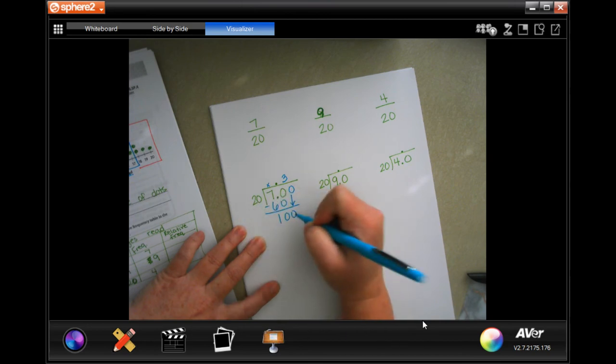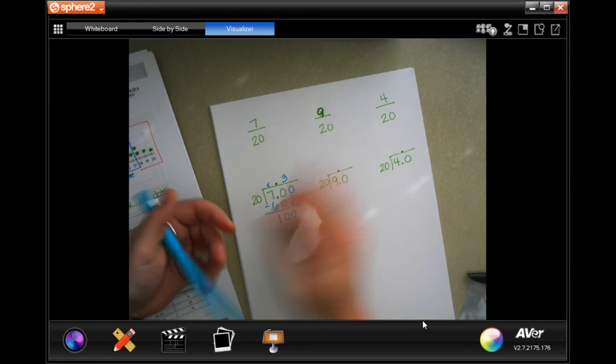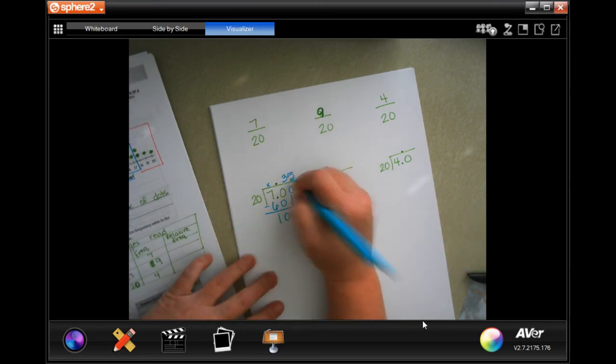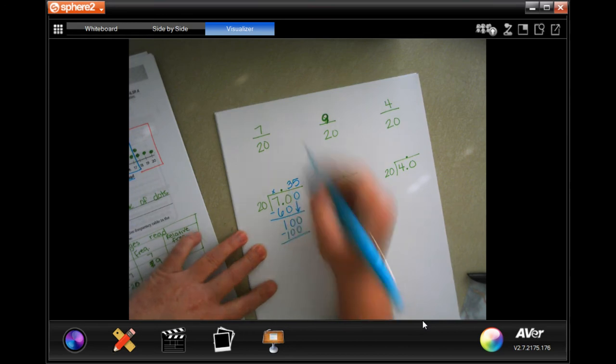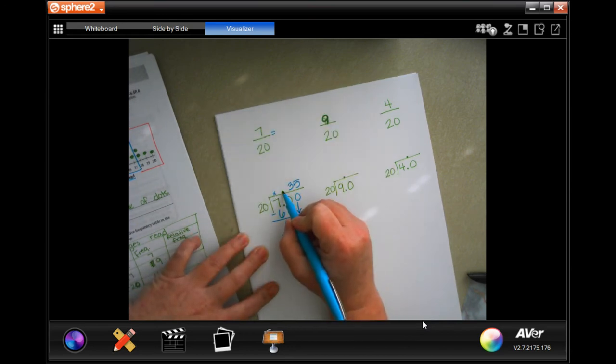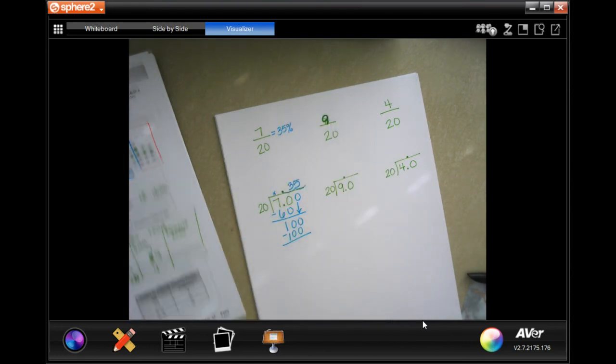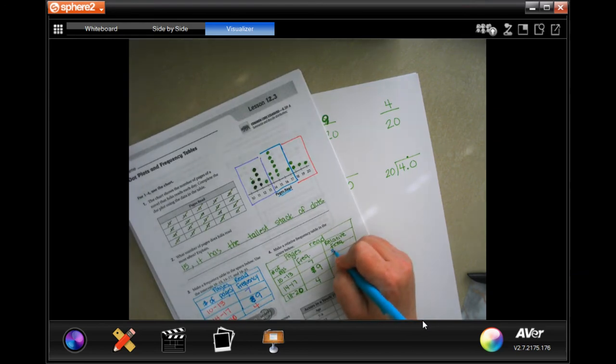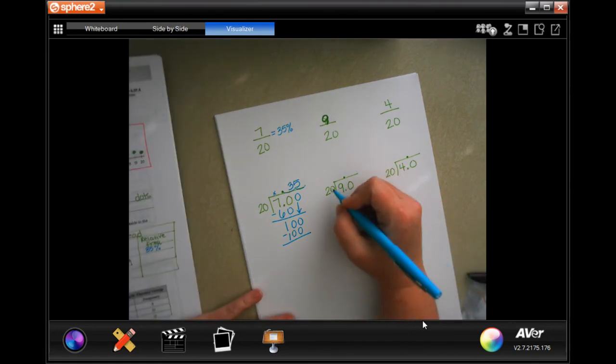Now, 20 goes into 100, well, 20, 40, 60, 80, 100, five times for 100. When we're moving things to a decimal, we move the decimal point one, two times to the right, which gives us 35 percent. So now this is 35 percent.